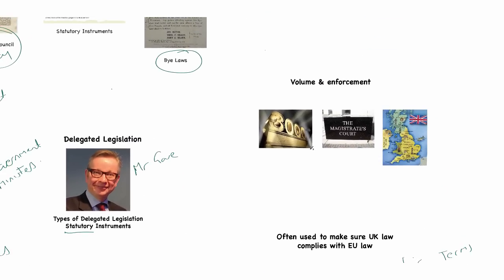The last thing to look at is volume and enforcement. There is a large volume of law made through the process of statutory instruments — it's beyond 3,000 statutory instruments every year that are produced. You can see that without the statutory instrument, there's no way that Parliament could introduce that amount of law. Statutory instruments are also enforced in the courts, and they are just as much a part of the law as any other enabling act or primary legislation.